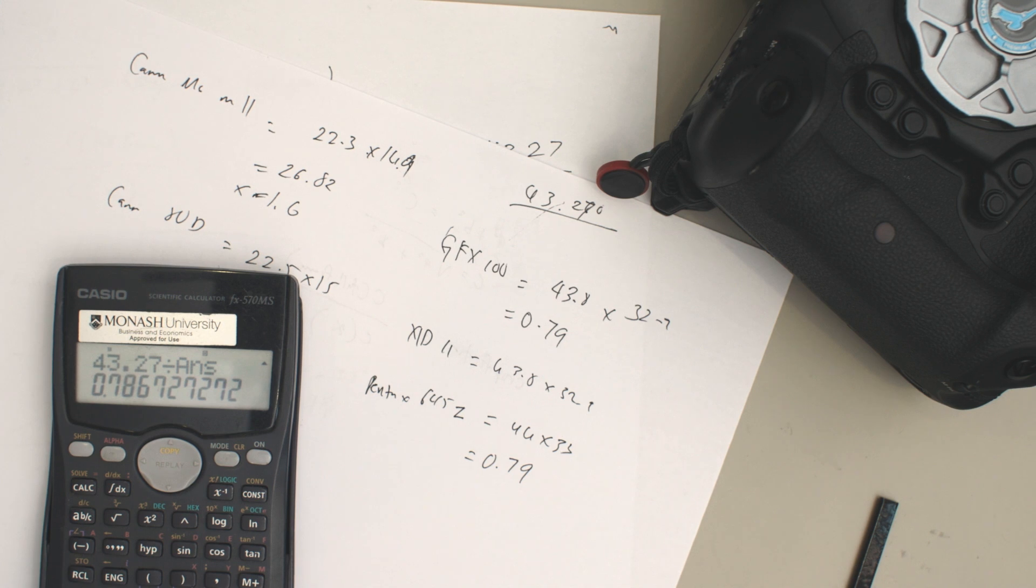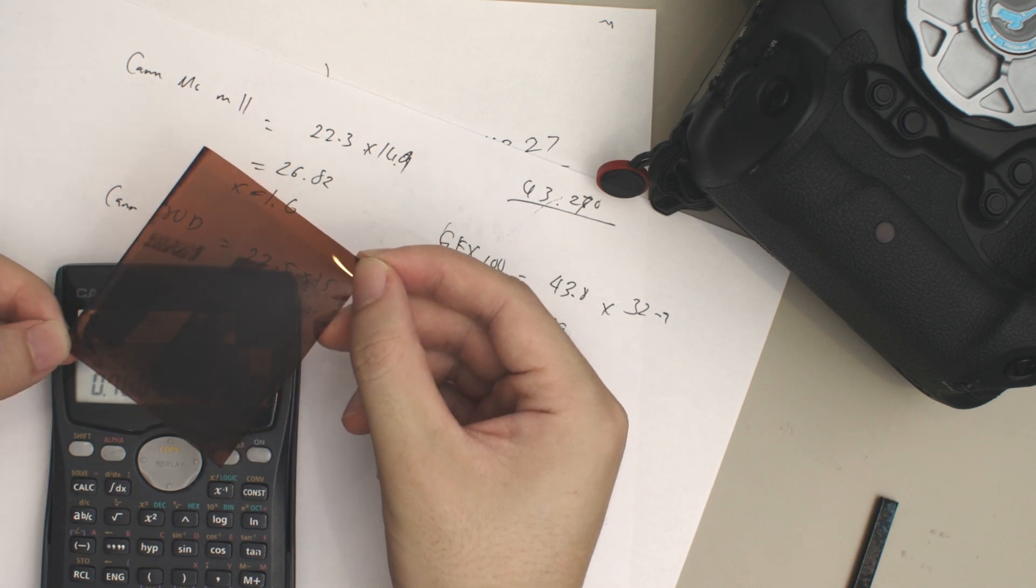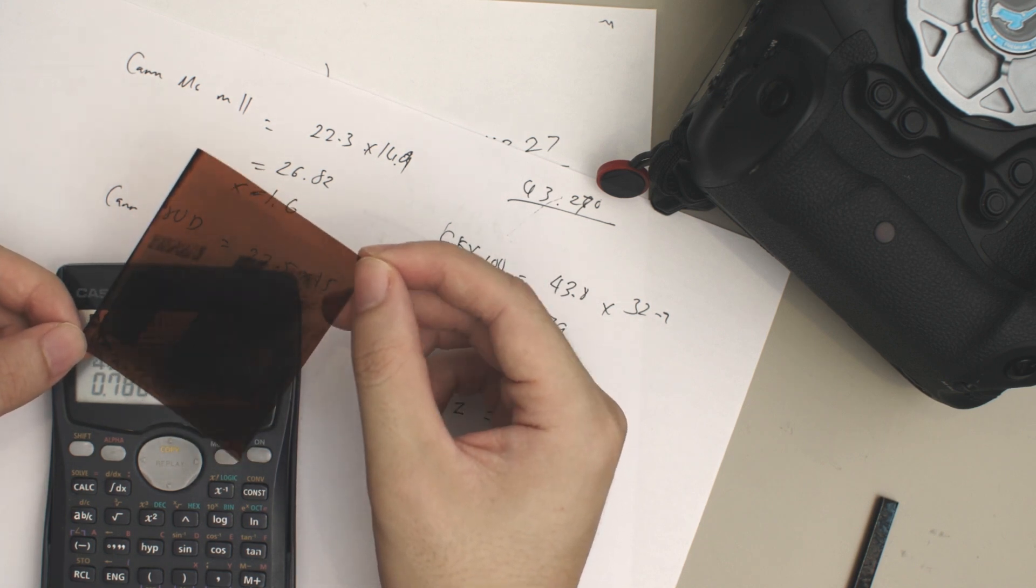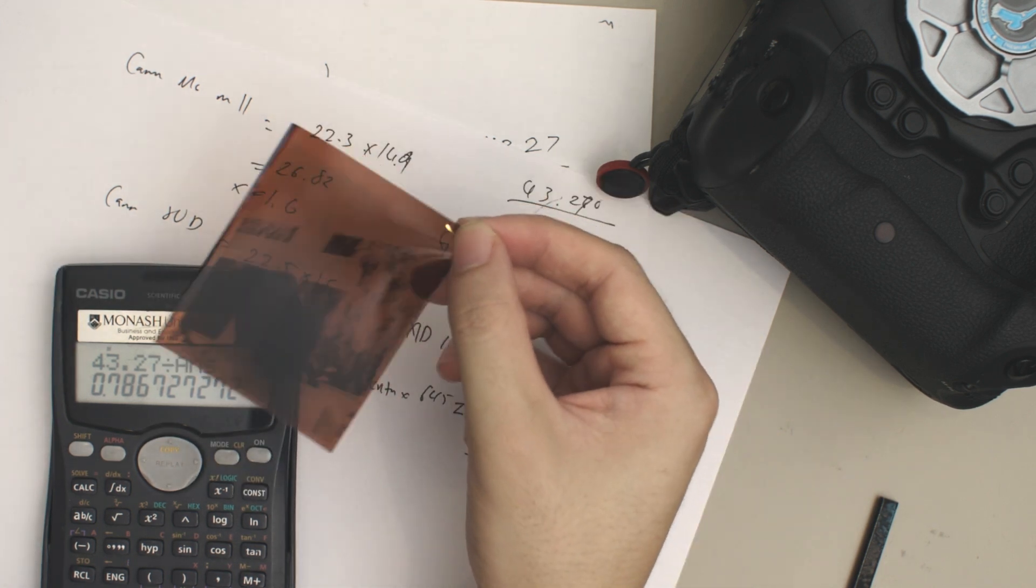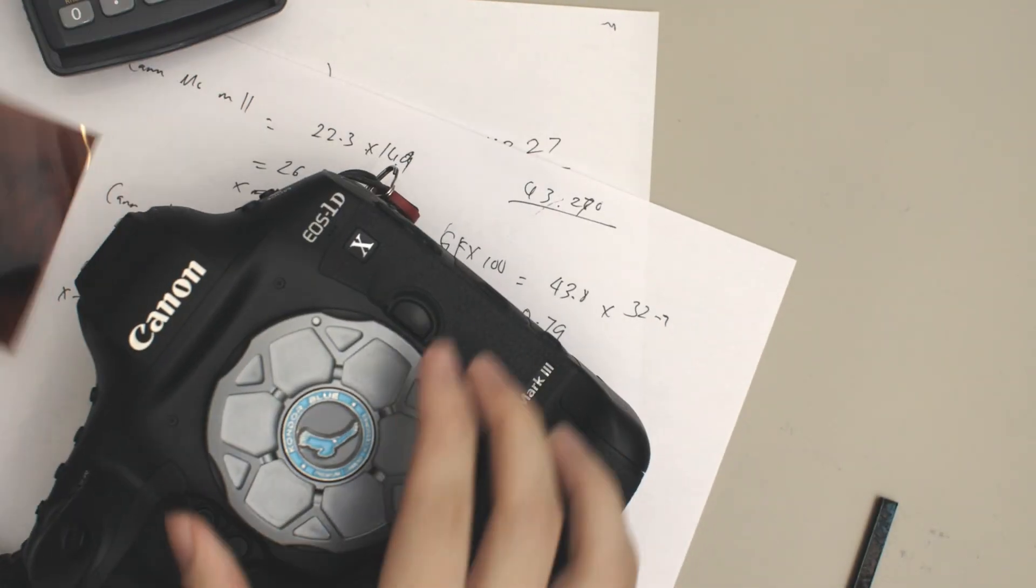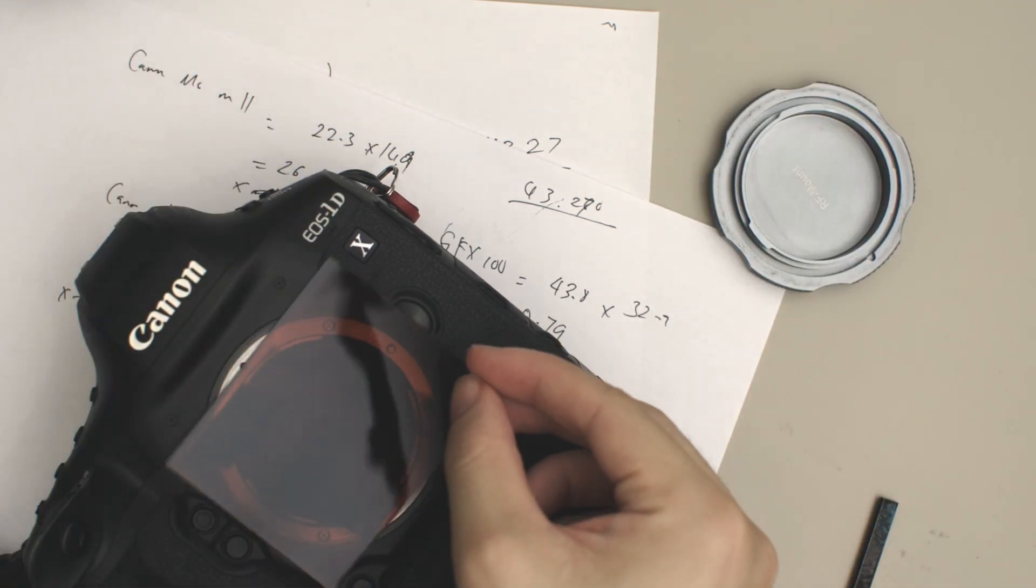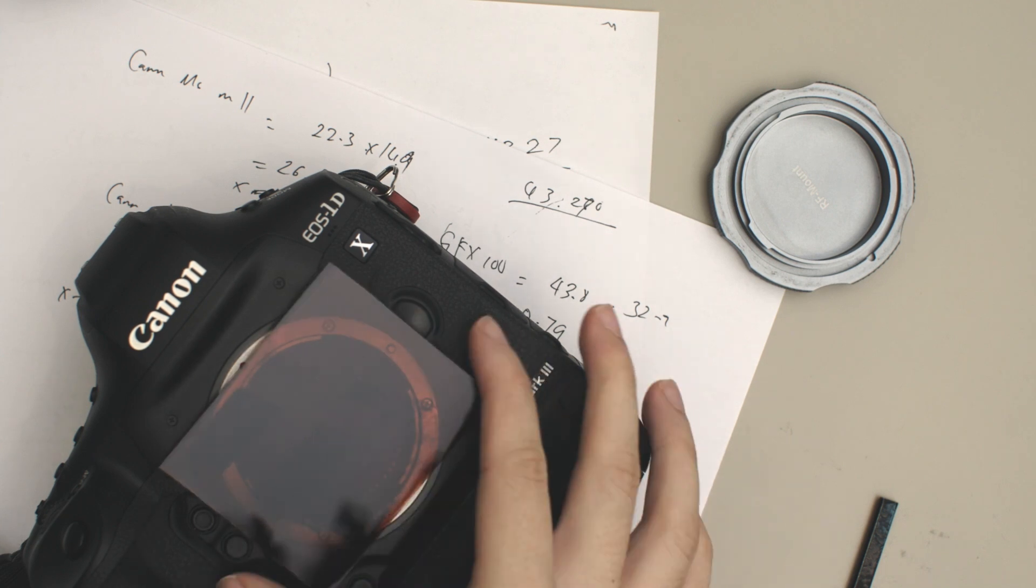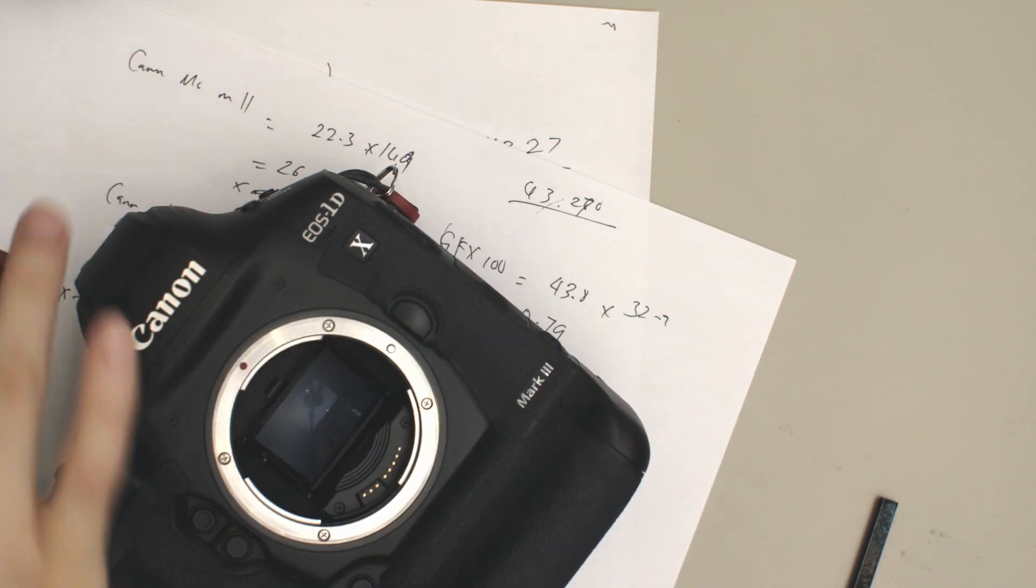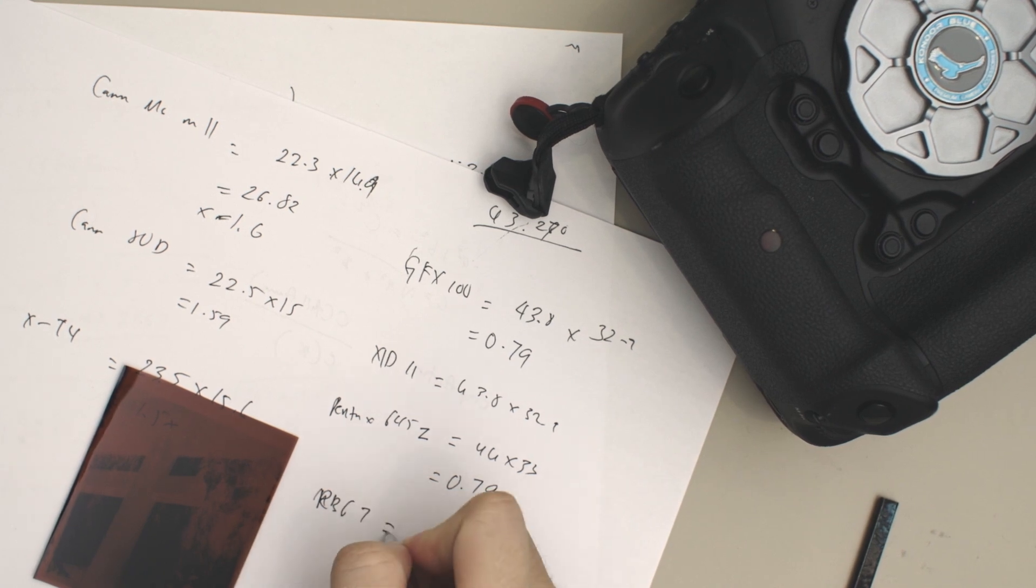Something interesting that I want to actually take a look at is the physical negatives of an actual medium format film camera. This is taken from the Mamiya RB67. This is the size of the actual medium format negative, and if we take a look at it compared to full frame, which is this—my 1DX—you see that it covers the entire lens mount. I want to know what the crop factor of this is, whether it's the same.